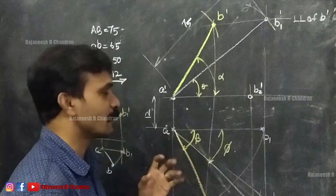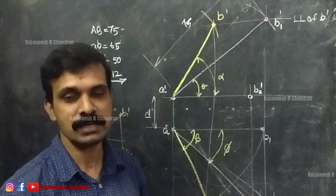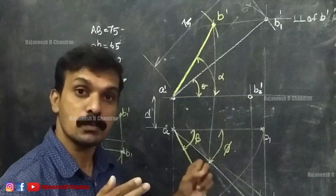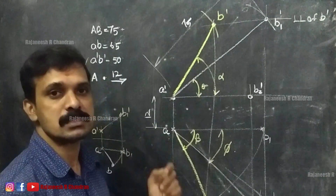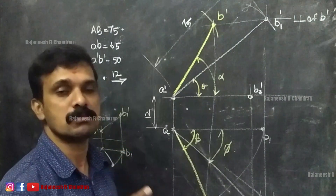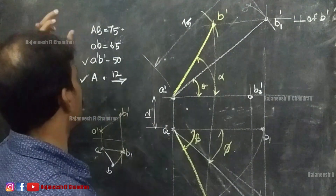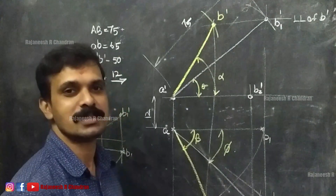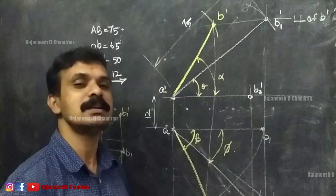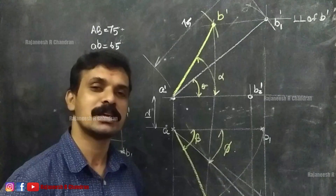So if all of you have understood the rotating line method — we have learned four different types of problems. In type 1, both endpoints and true length were given. In type 2, one endpoint, true length, and both inclinations were given. In type 3, one endpoint, true length, one true inclination, and the length of one of the projections were given. And here in type 4, true length, length of both projections, and one endpoint are given. I hope all of you have understood this problem — this is the rotating line method. In the next video, we will start studying the trapezoidal rule or rotating plane method.